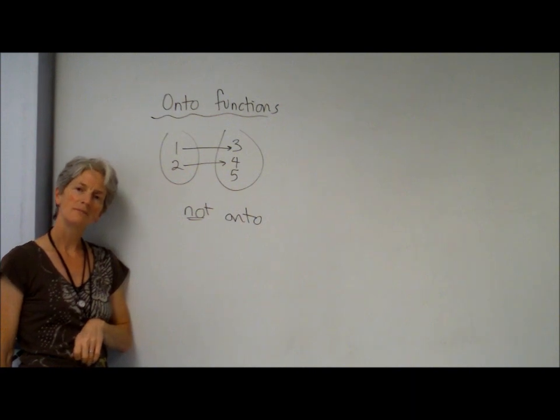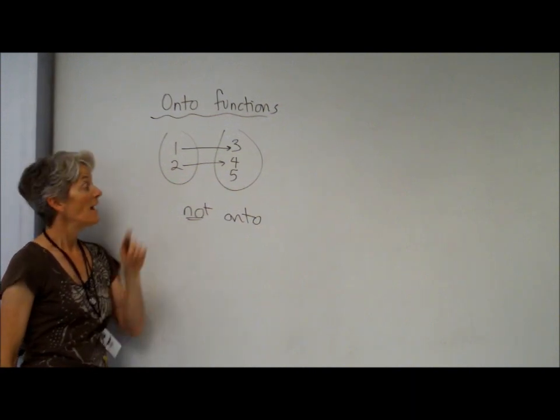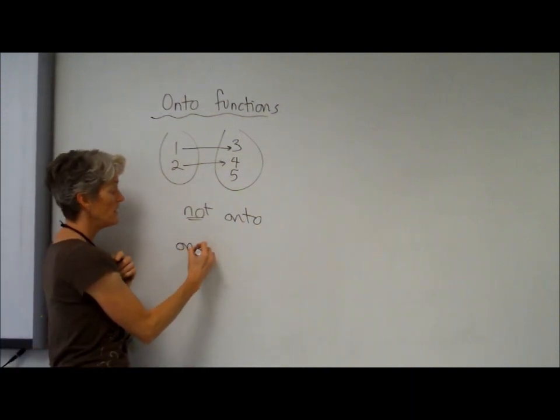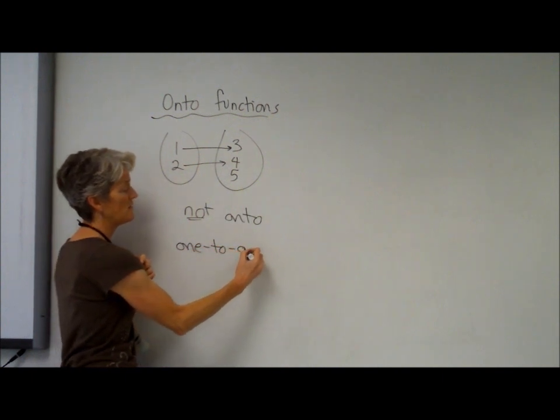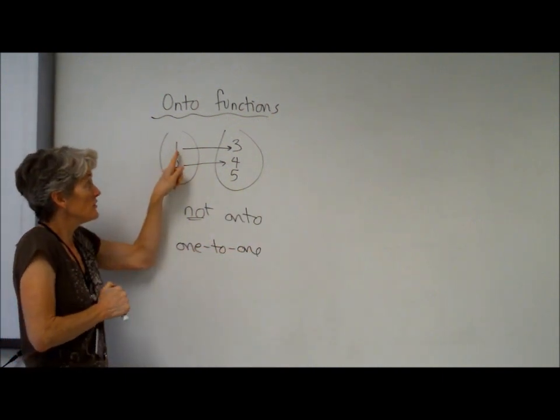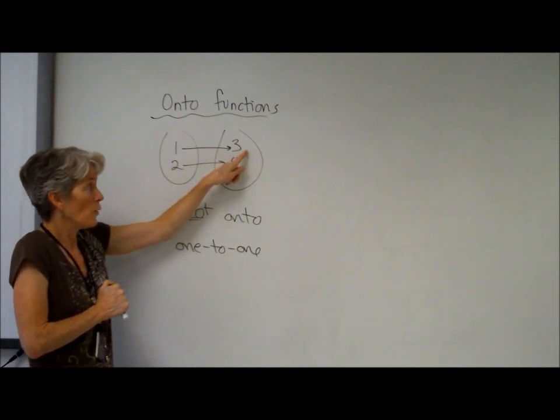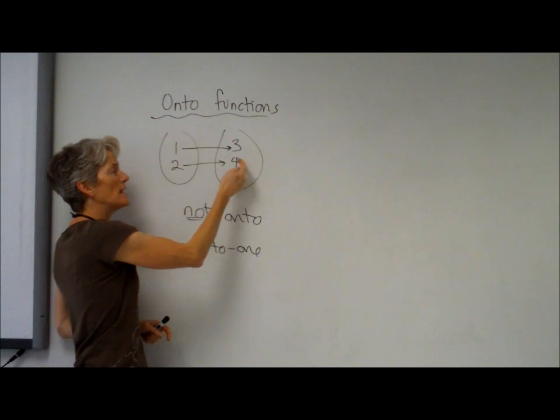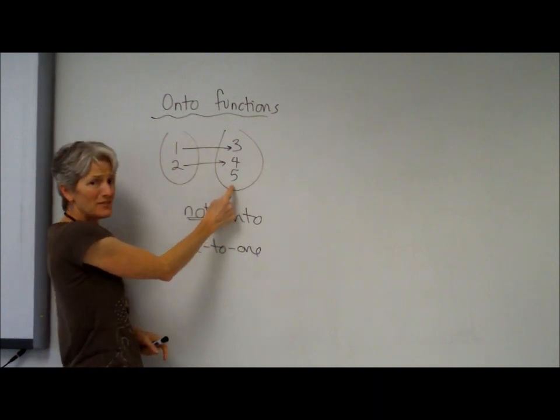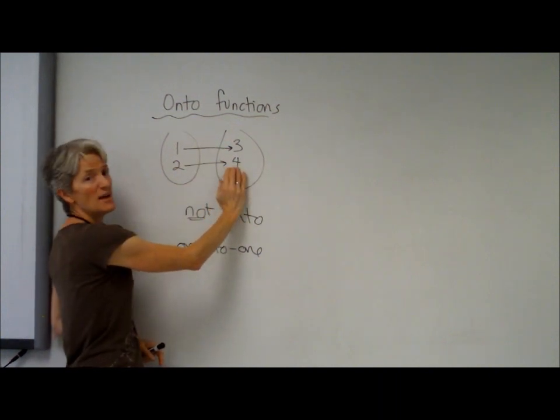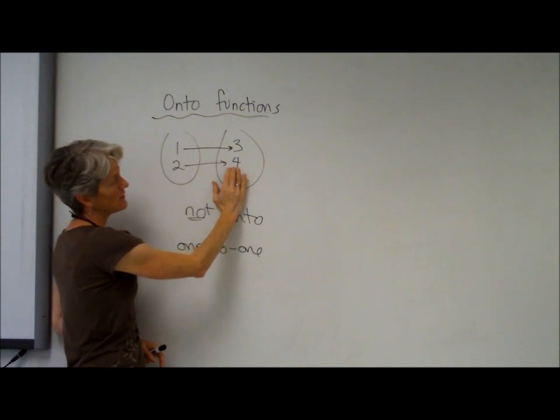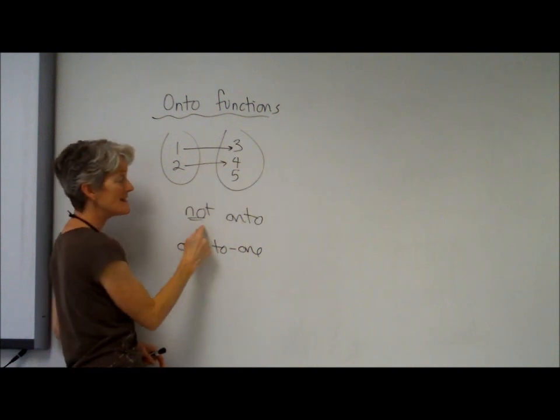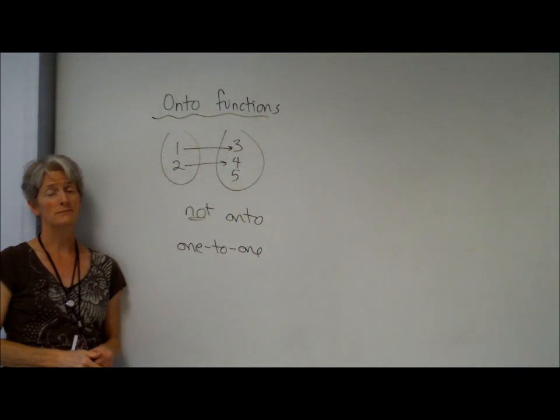I see, but that is a one-to-one function, right? This is a one-to-one function. It is a one-to-one function because each x in the domain goes to one y and each y in the range goes to one x. Now you might say, well, five doesn't play, but five isn't technically in the range because it wasn't used. So that is a one-to-one function but it's not onto.